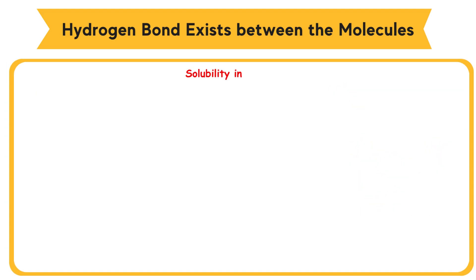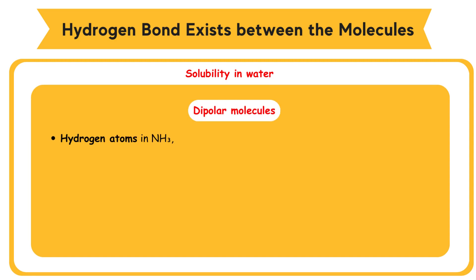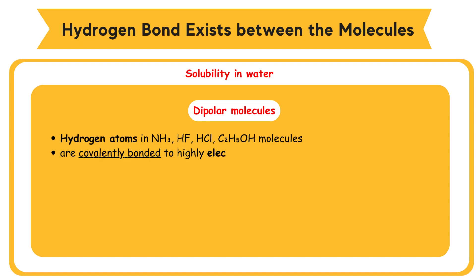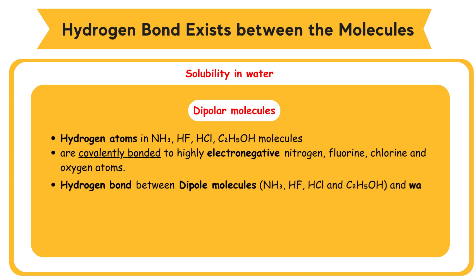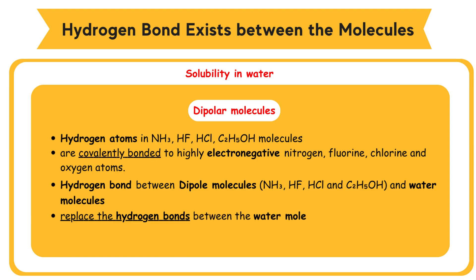Solubility in water: the hydrogen atoms in ammonia NH3, hydrogen fluoride HF, hydrogen chloride HCl, and ethanol C2H5OH molecules are covalently bonded to highly electronegative nitrogen, fluorine, chlorine, and oxygen atoms. These molecules become dipole molecules. The hydrogen bonds formed between the partially positive and negatively charged atoms, and the formation of hydrogen bonds between these dipole molecules — NH3, HF, HCl, and C2H5OH — and water molecules replace the hydrogen bonds between the water molecules themselves. Hence, dipole polar covalent molecules dissolve well in water.